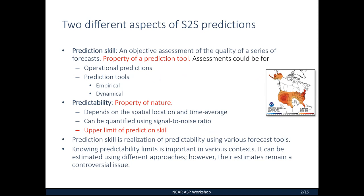There are two different aspects of long-range predictions on S2S time scales. One is knowing what the prediction skill is. CPC makes operational forecasts for seasonal mean surface temperature and precipitation anomalies every season. Users would like to know the average skill of our seasonal predictions, so it's important to objectively assess the quality of the series of forecasts we have done in the past. Assessments of prediction skill can be for operational predictions or for individual prediction tools, and prediction skill is a property of what prediction tool you are using.